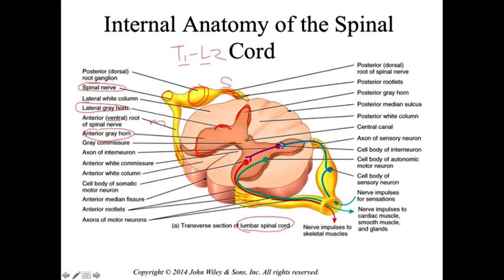Right in the center is the central canal where CSF flows. On the nerve root side, there's a sensory neuron on the dorsal root, a motor neuron on the ventral root with its axons visible, and relaying between them is the interneuron or association neuron.